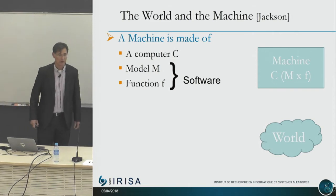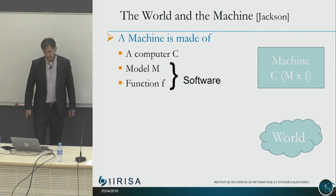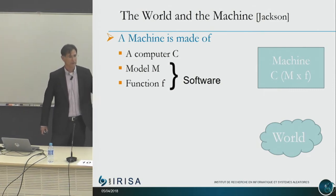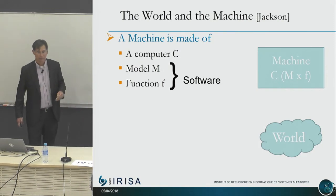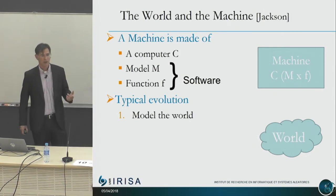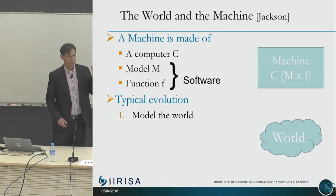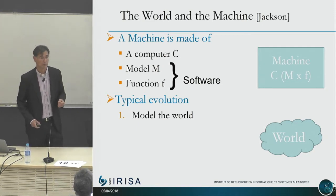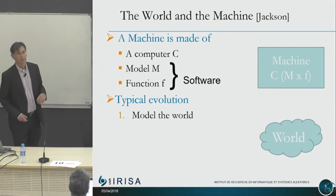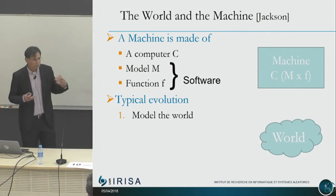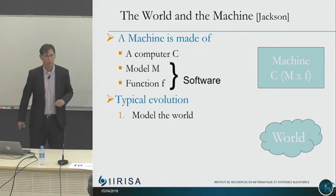This notion of the world and the machine comes from Jackson. Looking at history, when software has been introduced in various domains, it always follows the same story. First, it's there to model the world, to provide a kind of simulation. One of the very first software applications was for weaponry — computing the angle of guns for Navy ships. So it's really about modeling and knowing stuff about the world.